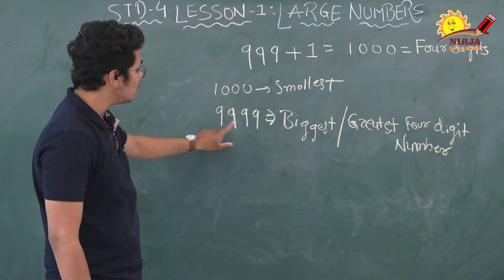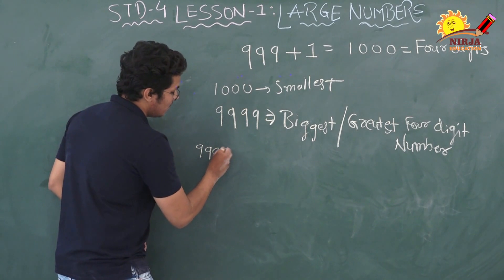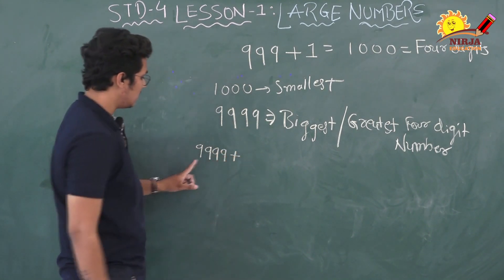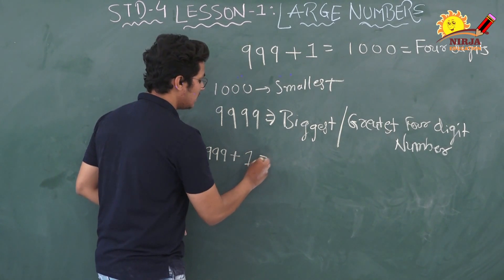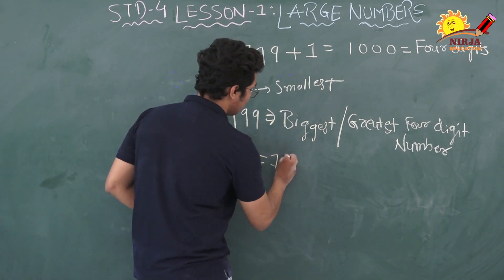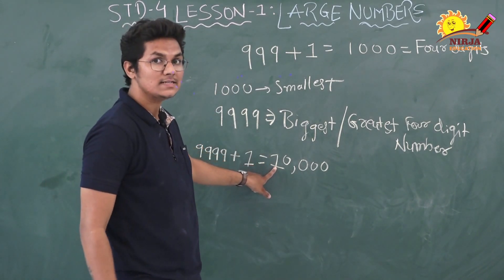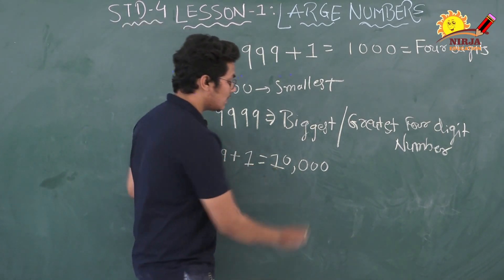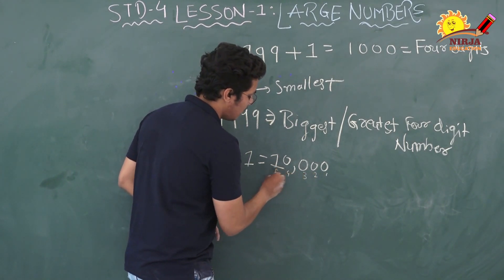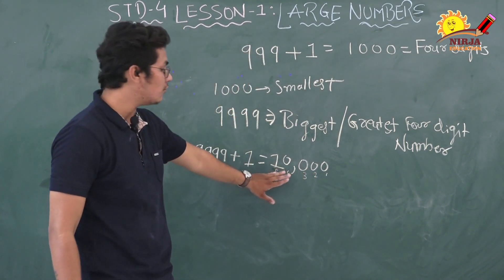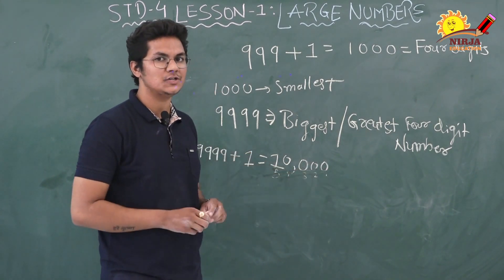What do we get if we add 1 to this number? If we add 1 to 9999, we get 10000. So 10000 is a 5-digit number. We can count from the right: 1, 2, 3, 4, 5. You can see that there are 5 digits, and this number is the smallest 5-digit number.